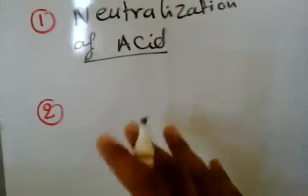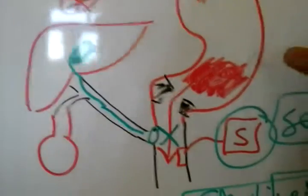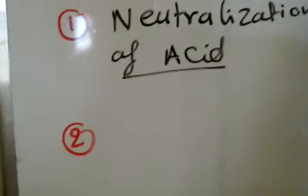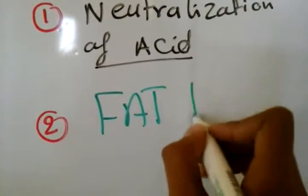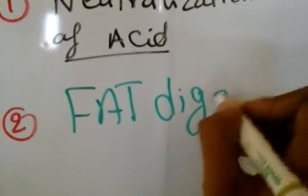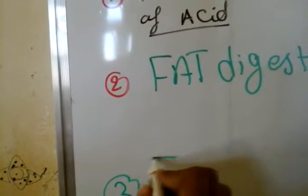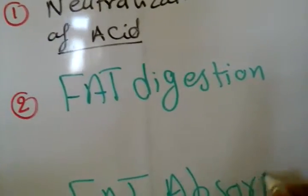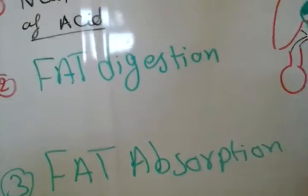The next functions of bile are fat digestion and fat absorption. To recap: the first function is neutralization of the acid — the chyme's acidity is neutralized by the bile. The second function is fat digestion, and the third is fat absorption. How are these done?